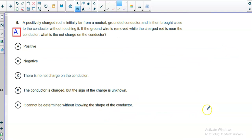A positively charged rod is initially far from a neutral grounded conductor and is then brought close without touching. If the ground wire is removed while the charging rod is near, what is the net charge on the conductor? Here's our conducting object connected to ground. You bring a positive rod close. All the positives leave through ground, leaving negatives. If you then cut this wire, you've charged this thing negatively by induction.